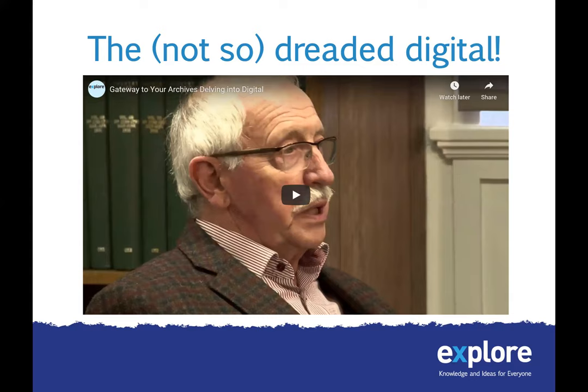Up until this point we've been looking mainly at physical records — paper and photographs. But you also need to think about your digital records and storing them appropriately. It's just as important, but they have different risks. Obviously they don't have the same environmental risks — a mouse might eat through your computer cable but it's not going to damage the contents of your hard drive. Many digital storage methods are not yet tried and tested, so we don't have all the data needed to give you one single secure option, which is why there are a number of different options to consider.